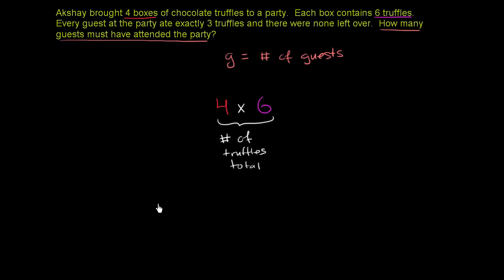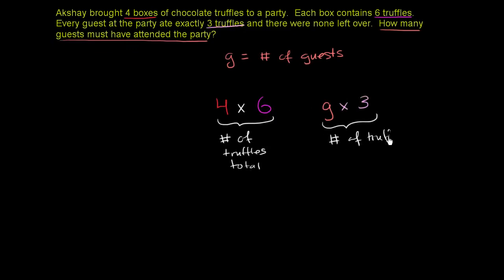What's another way of thinking about the total number of truffles at the party? You have G guests, and each guest ate three truffles, so G times three is also going to be the number of truffles total. These two things need to be equal to each other.